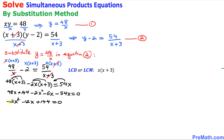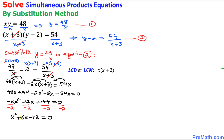We can see that this equation is divisible by negative 2, so dividing across the board by negative 2 makes things easier. The negative 2 cancels, and we end up with x squared plus 6x minus 72 equals 0. This is a quadratic equation that can be easily factored.